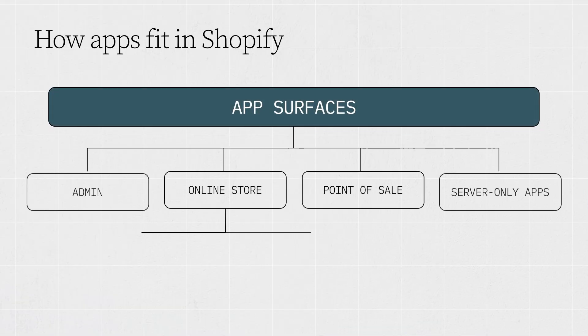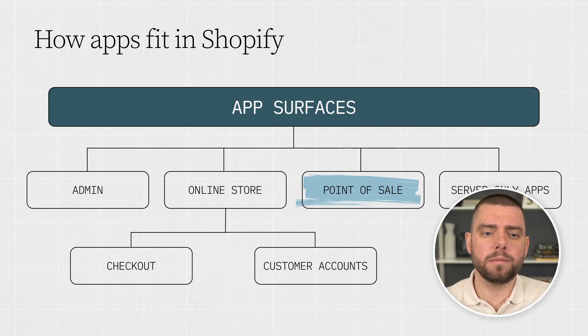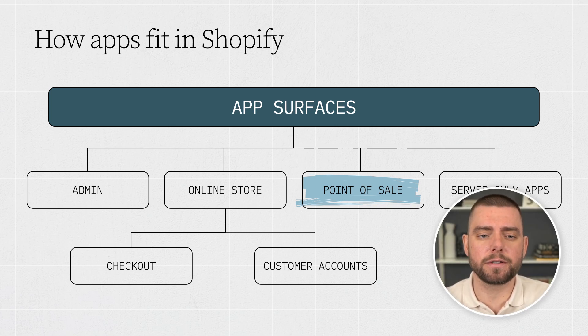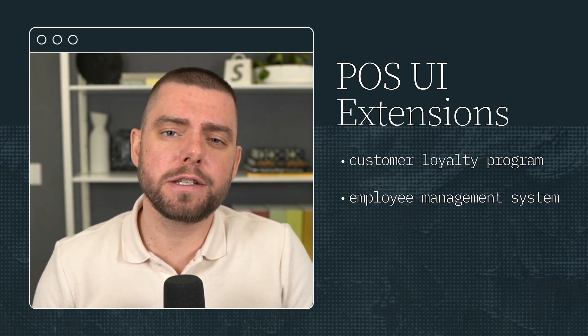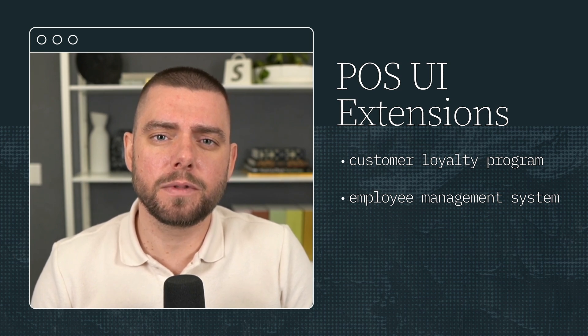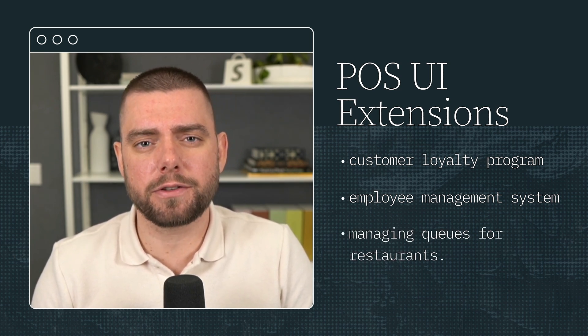The next surface is Shopify POS, or point of sale. This POS system enables businesses to sell products in person. Many retail businesses require further customizations, done through POS UI extensions. These apps might be a customer loyalty program, employee management system, or managing queues for restaurants.